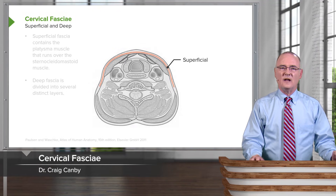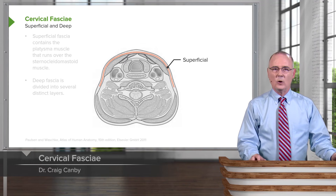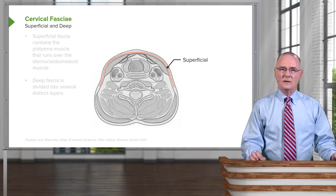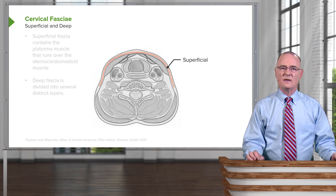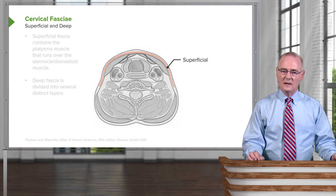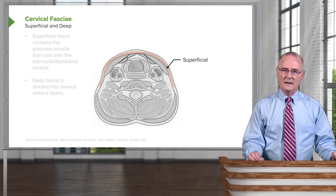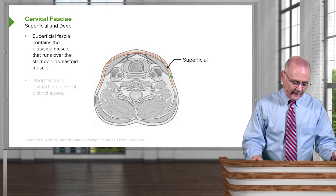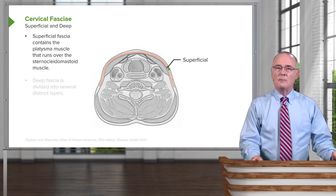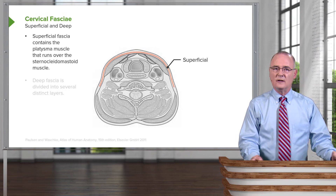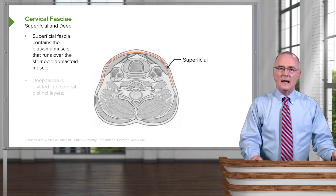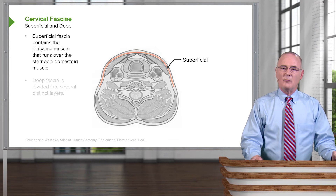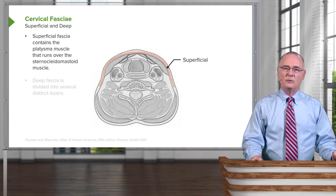Next, we need to understand the cervical fascia. When we look at the fascia of the neck, we are looking at fascia that is related superficially, and then fascia referred to as the deep cervical fascia. The superficial fascia is identified in through here — this particular structure is the platysma muscle. Interior to the sternocleidomastoid, this superficial fascia would run posteriorly.